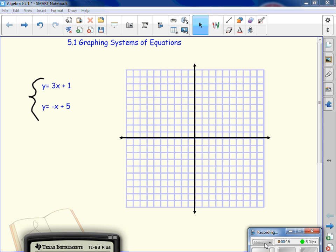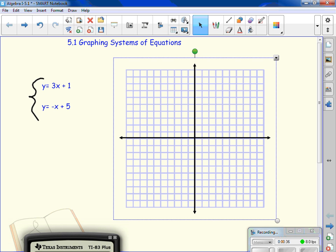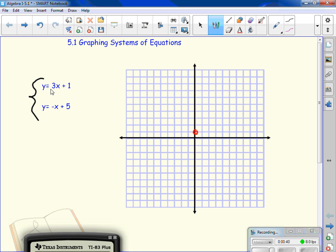The system I have is y equals 3x plus 1 and y equals negative x plus 5. We graphed the first point. How do we graph the first point here? Which point do I use? So I start up 1. My slope then is 3. It's 3 over 1, so it means up 3 to the right 1.